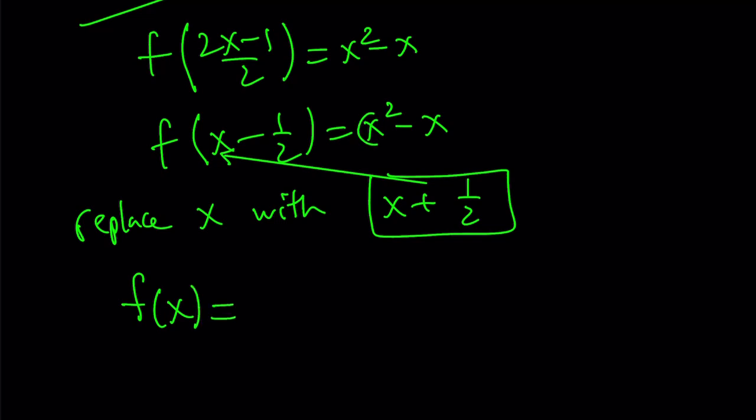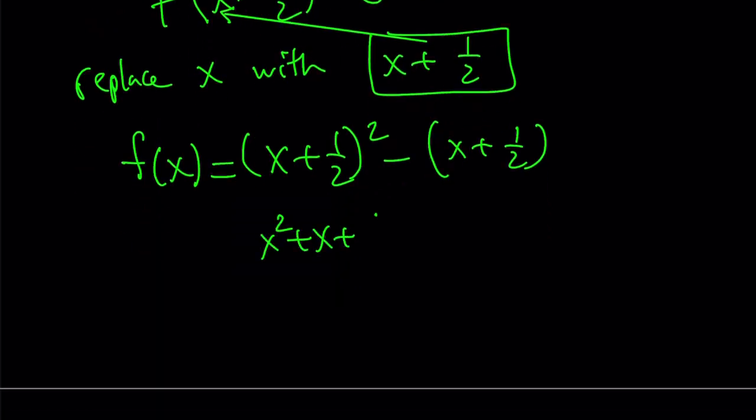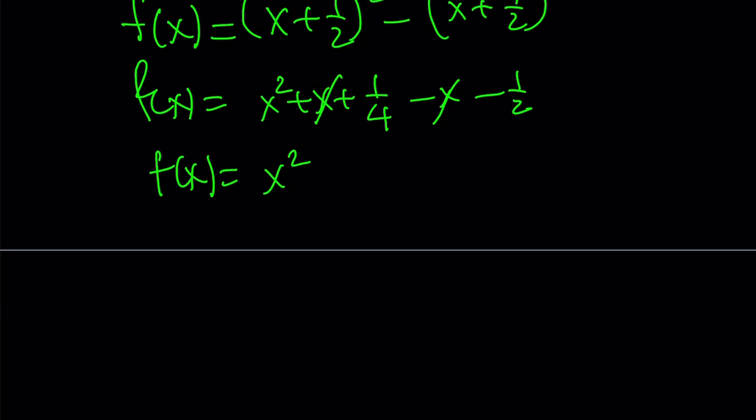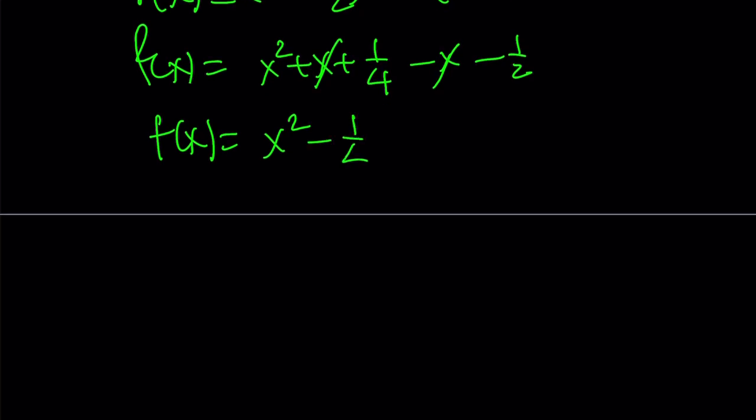On the right hand side, remember, we're replacing x with x plus 1 half. So we get x plus 1 half squared minus x plus 1 half. And this is going to give us x squared plus x plus 1 fourth minus x minus 1 half. And here x is going to cancel out, leaving us with f of x equals x squared plus 1 fourth minus 1 half, which gives us minus 1 fourth.